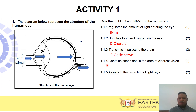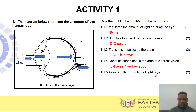Question 1.1.4 asks which part contains cones and is the area of clearest vision. On the retina we have cones and rods, and the labeled part C is the fovea, or yellow spot — it contains cones and is where the best image forms. Question 1.1.5 asks which part assists in the refraction of light rays. Refraction occurs at the cornea and lens, but the labeled part A is the cornea.